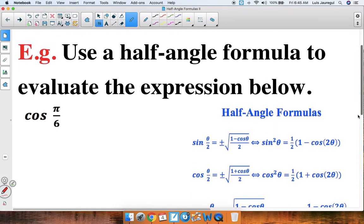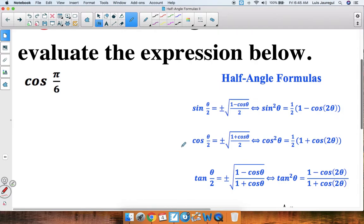Looking at our different half angle formulas, we realize that the second one is the one that uses cosine. Now notice that the input is theta over 2 and here in our expression the input is pi over 6. So let's match them up.